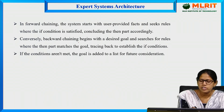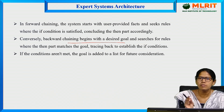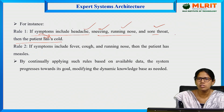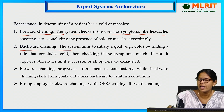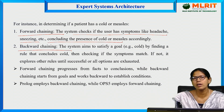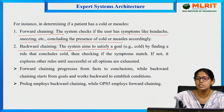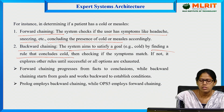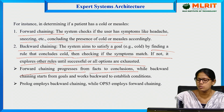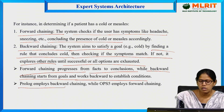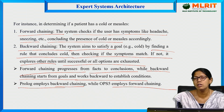Backward chaining begins with the desired goal — for example, cold — and then matches it with symptoms such as running nose, headache, and sore throat. The system aims to satisfy a goal by finding a rule that concludes cold, then checking if symptoms match. If not, it explores other rules until successful or all options are exhausted. Forward chaining progresses from facts to conclusions, while backward chaining starts from goals and works backward to establish the conditions. Prolog uses backward chaining while OPS5 employs forward chaining.